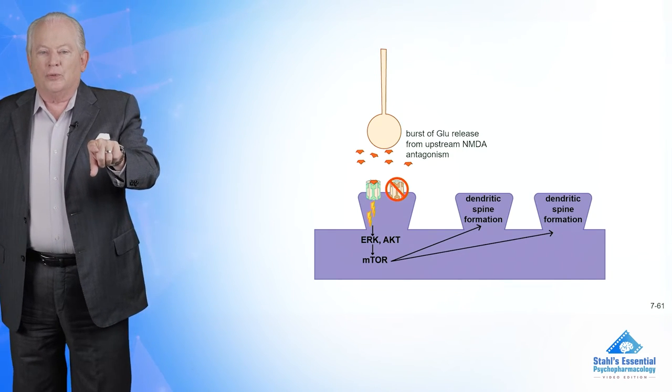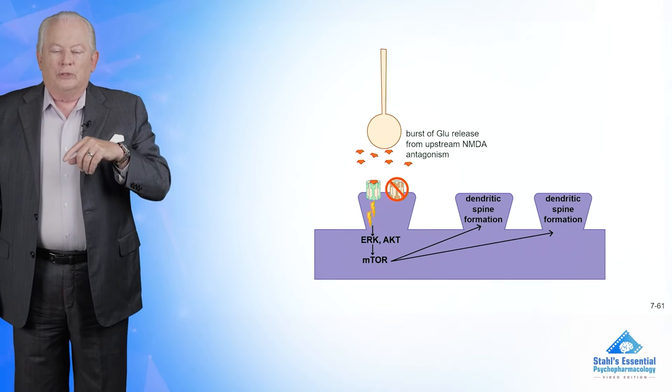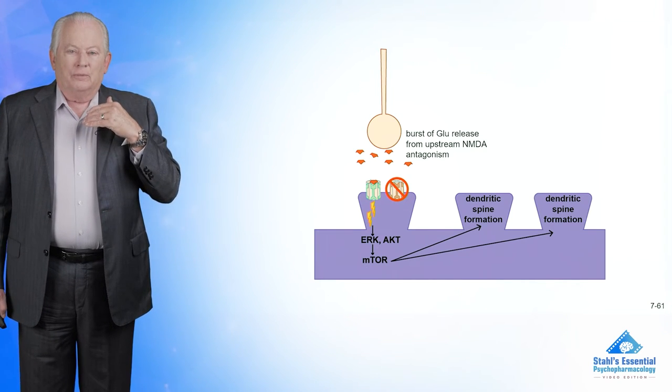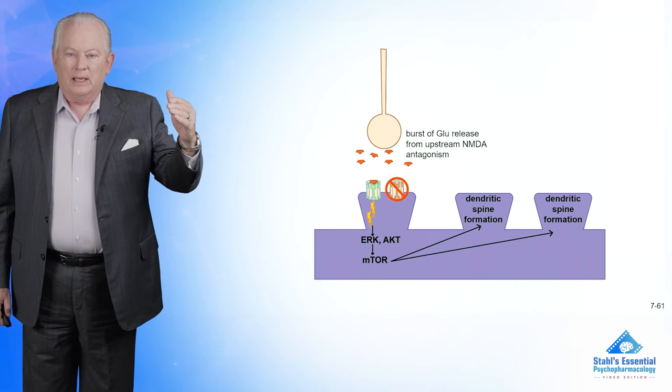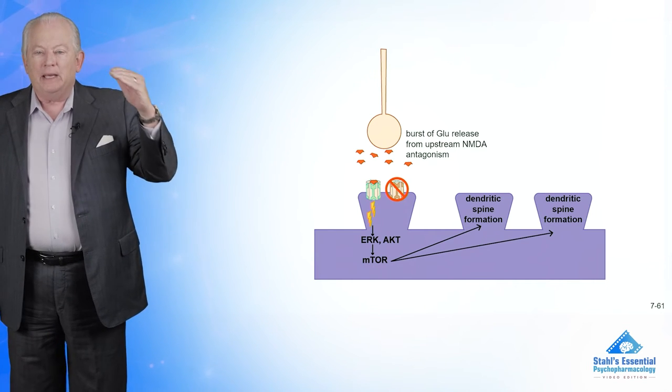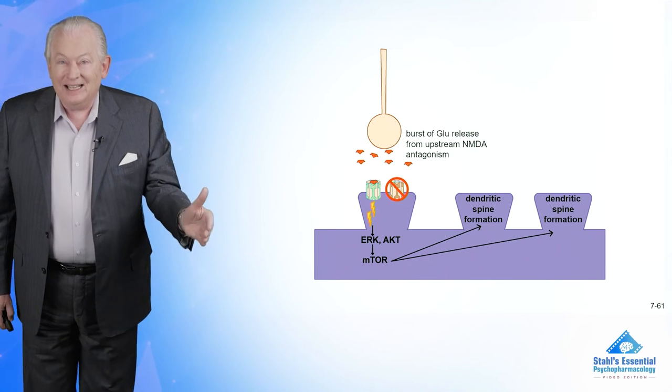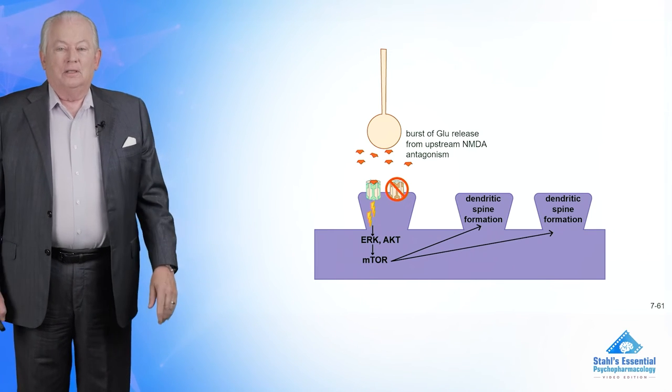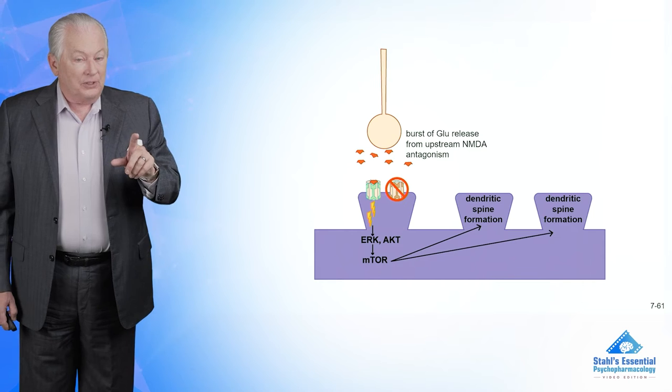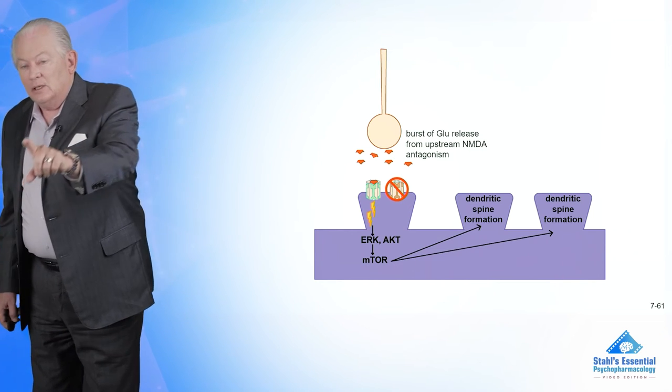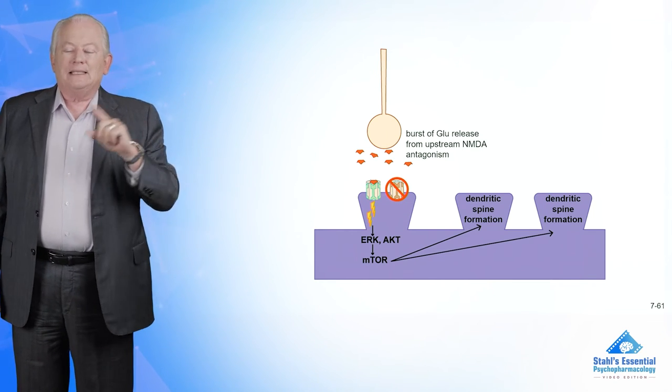Because that signal being transduced into those molecules will make this happen, spine growth. And what you're finding is that you give ketamine, you immediately get blockade, and you immediately get spine formation, and you immediately get an antidepressant effect. So we think that the antidepressant effect could be linked to this called neuroplasticity.